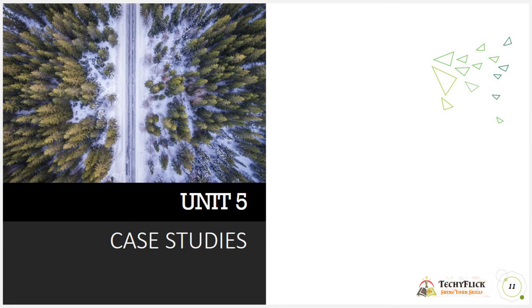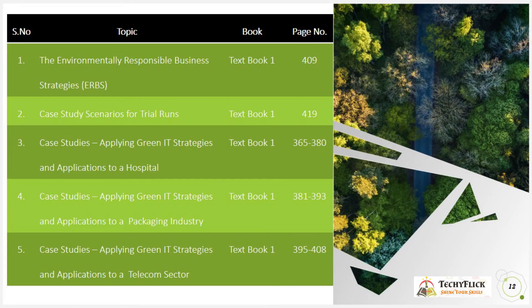The last unit, unit five, is Case Studies, with five topics. First, Environmentally Responsible Business Strategies (ERBS), from textbook one, page 409. Second, case study scenarios for trial runs, from textbook one, page 419. There are also three case studies: one on applying green IT strategies to a hospital, one on the packaging industry, and one on the telecom sector. These three are from textbook one, pages 365 to 408.